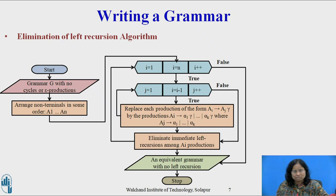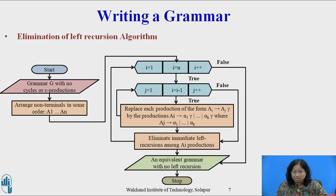Step 1: Arrange the non-terminals in some order A1, A2, ..., An. For i = 1 to n, do: For j = 1 to i−1, do: Replace each production of the form Ai derives Aj γ by the productions Ai derives α1γ | α2γ | ... | αkγ, where Aj derives α1 | α2 | ... | αk. End inner for loop. Then eliminate the immediate left recursion among the Ai productions. End outer for loop.